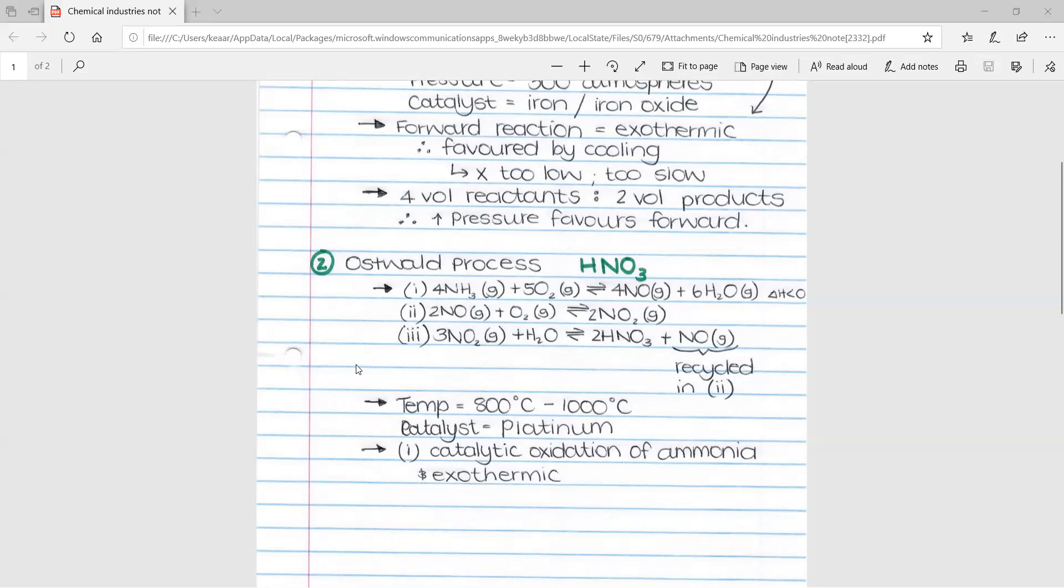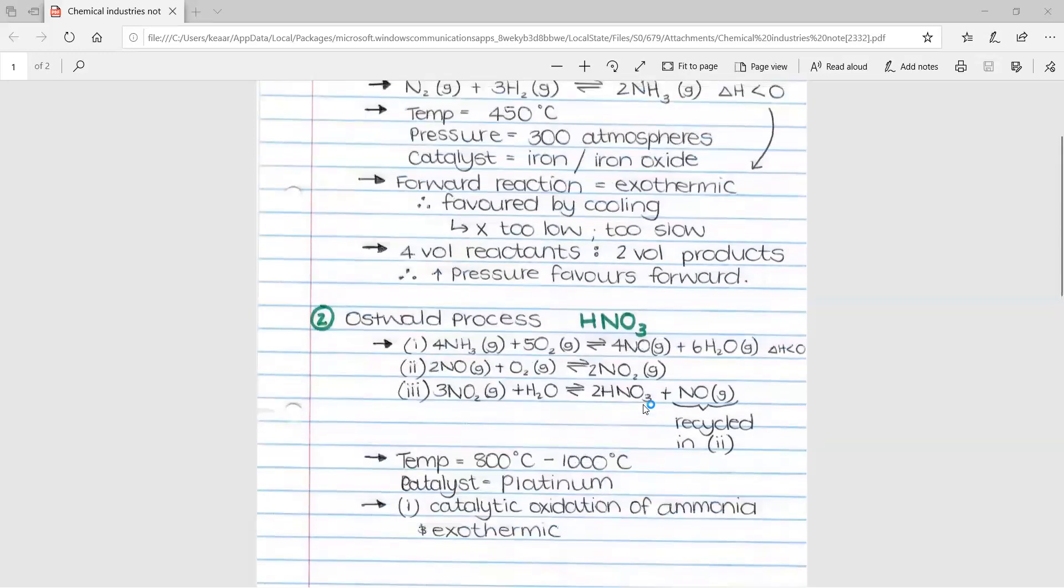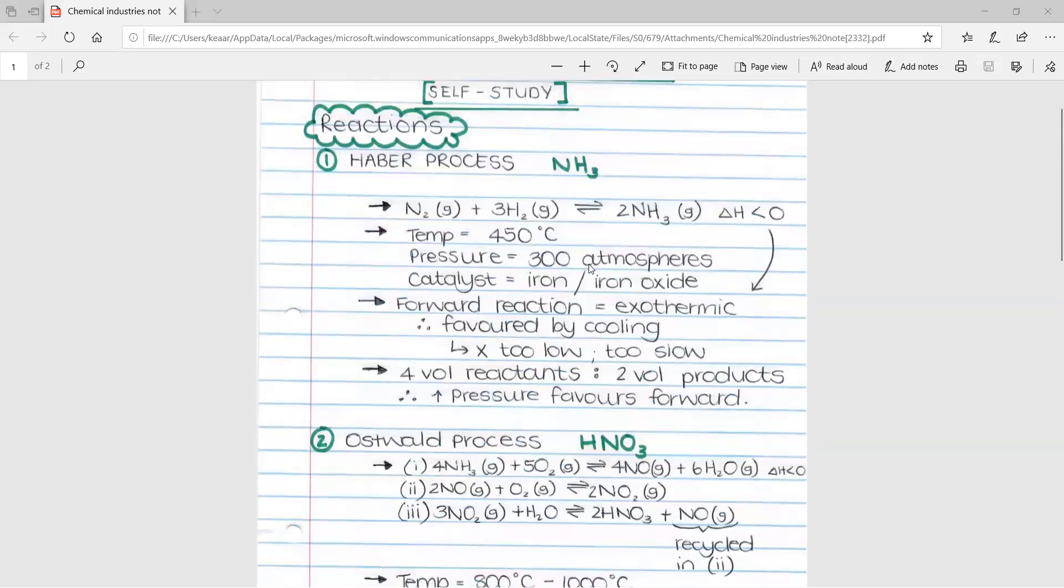Some characteristics of this process. The temperature ranges between 800 degrees and 1000 degrees Celsius. It uses a catalyst of platinum. We can see that this temperature is much higher than the temperature of the Haber process.